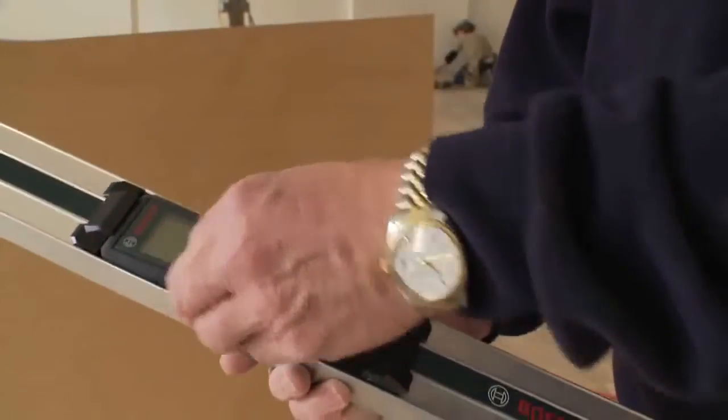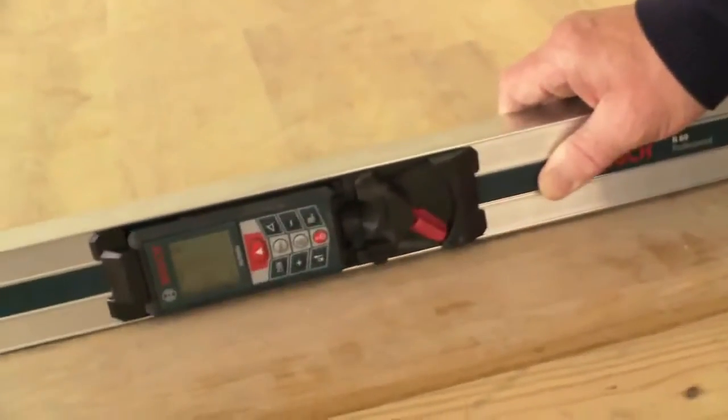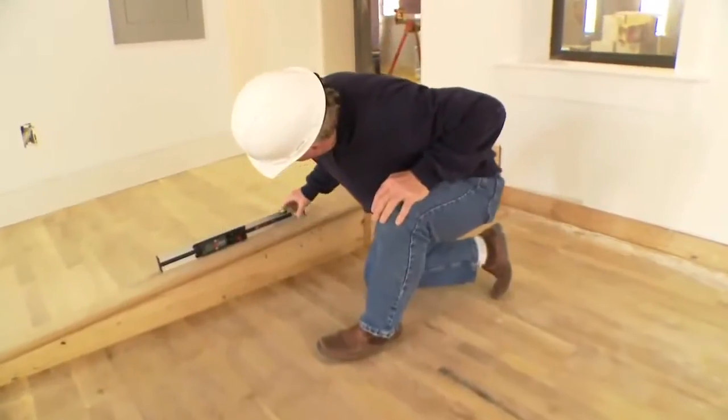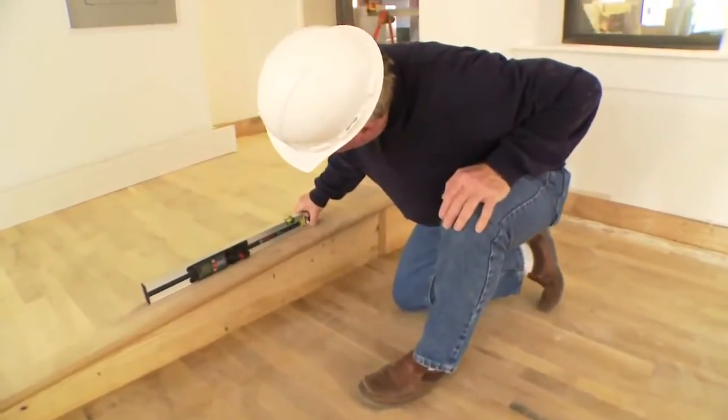When the unit is inserted into the optional aluminum rail, the GLM-80 transforms into a digital level and provides easy digital slope measurements.